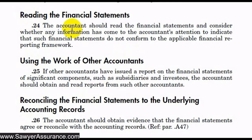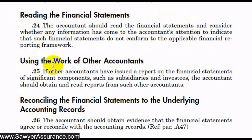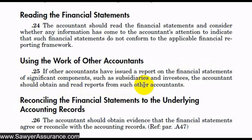The standard says the accountant should read the financial statements and consider whether any information has come to the accountant's attention to indicate that such financial statements do not conform to the applicable financial reporting framework. And if other accountants have issued a report on the financial statements of significant components, such as subsidiaries and investees, then the accountant should obtain and read reports from such other accountants.